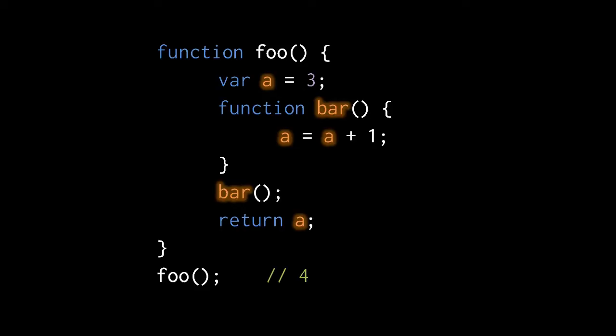The fifth and last thing to understand about nested functions is that, through a language feature called closure, a nested function can use the variables of the function call in which it was created even after that function call returns. Normally, the local variables of a function call disappear once the call returns, but closure preserves the variables for use by the nested function. In our example, the nested function bar is only stored in a local variable of foo, so bar disappears along with the local variables of foo when the call returns. However, if we return bar itself from foo, or store it in some variable, array, or object outside the function foo, then bar will outlive the call to foo and may make use of closure.